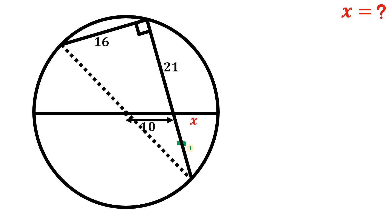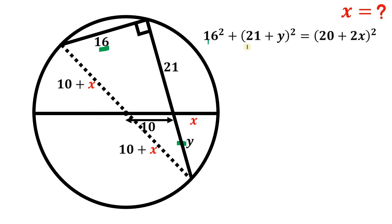Now let's call this segment equal to y. We know that the radius of this circle must be equal to 10 plus x. Now we have a right triangle — we know its sides: 16, 21, 21 plus y, and 20 plus 2x. Therefore we can use the Pythagorean theorem: 16 squared plus (21 + y)² equals the hypotenuse squared, (20 + 2x)². Now we have an equation, but it has two variables.